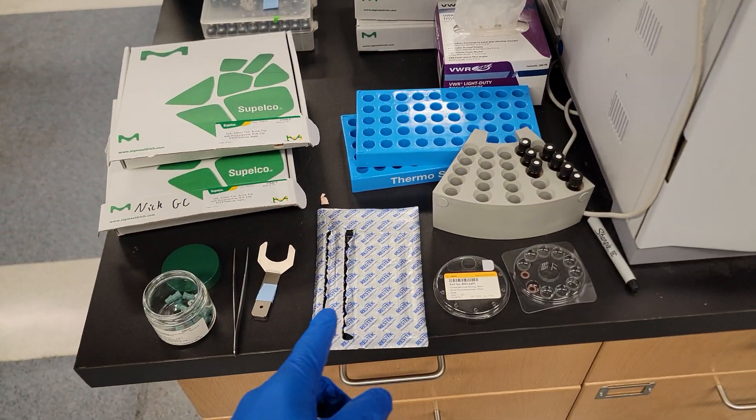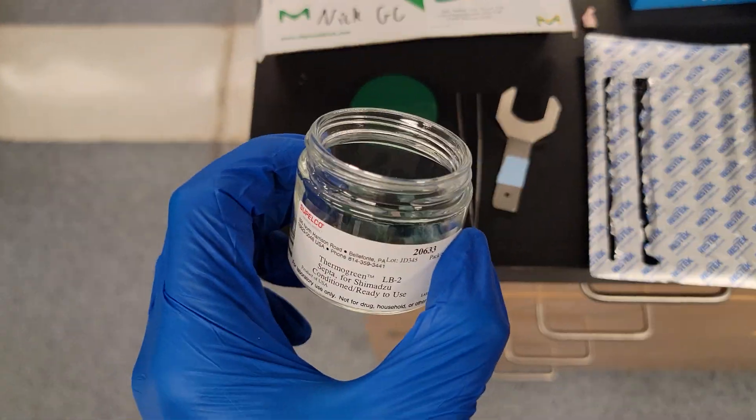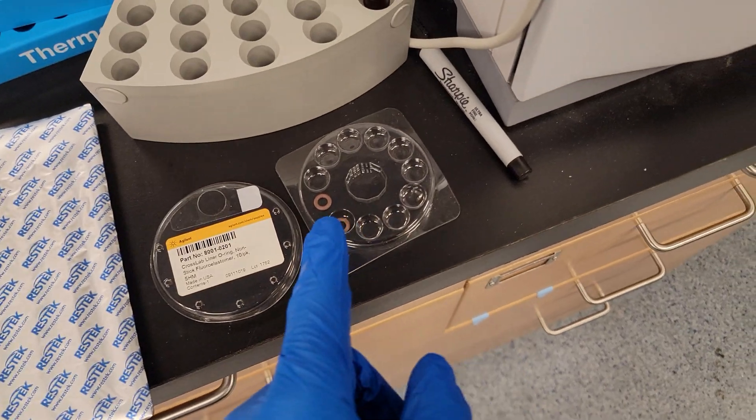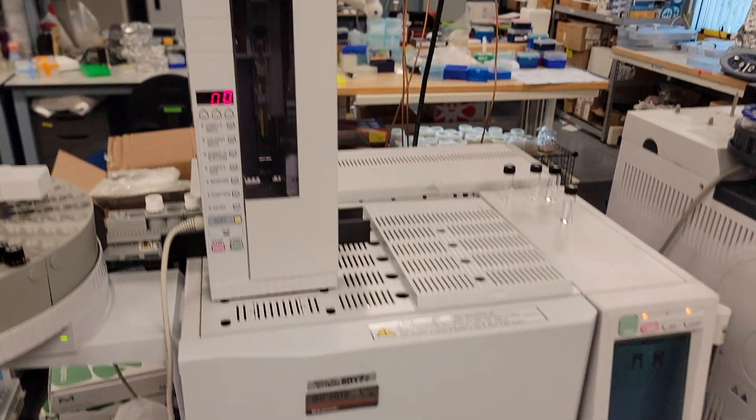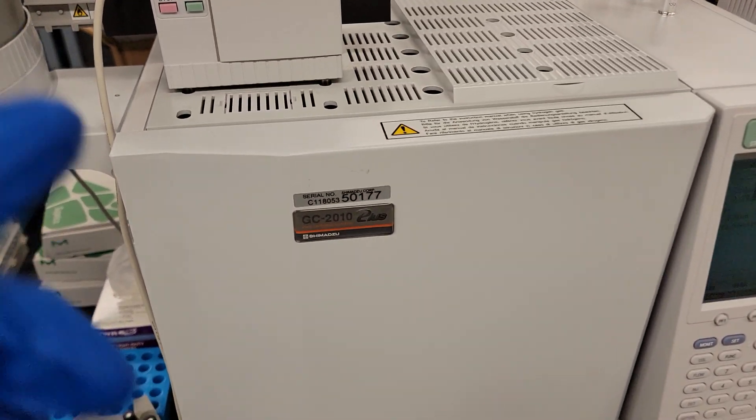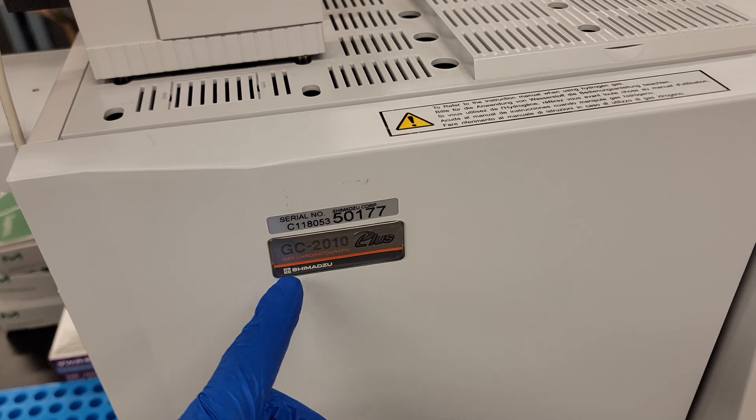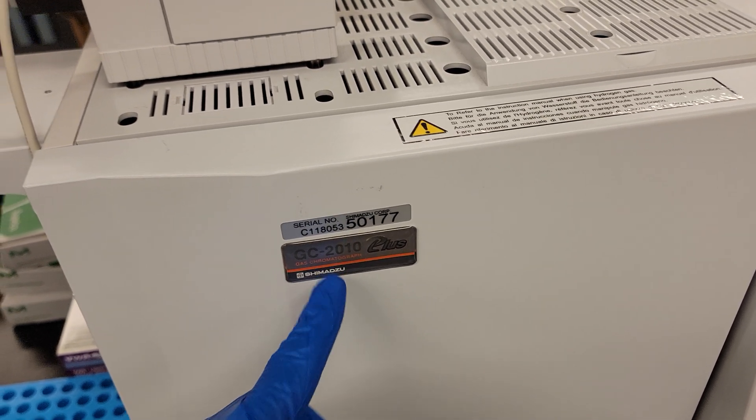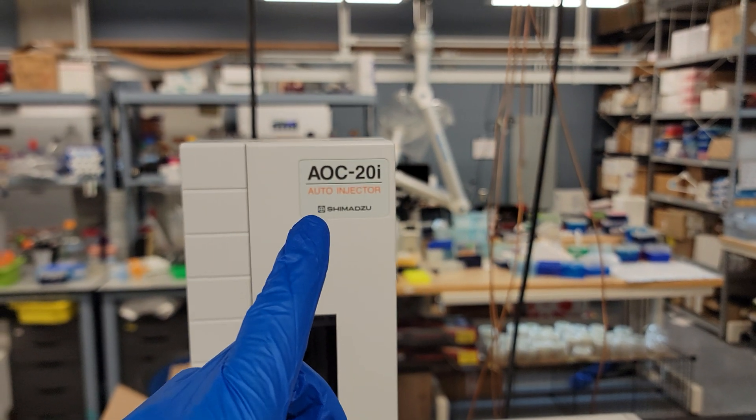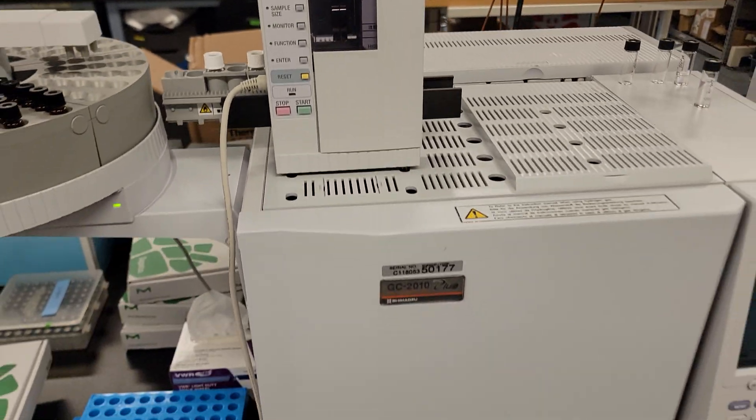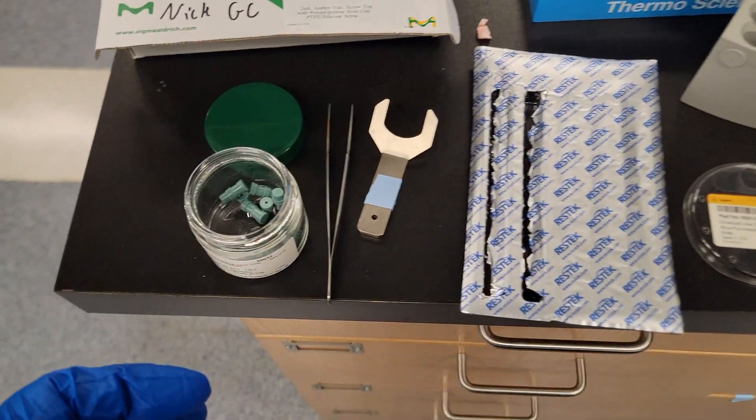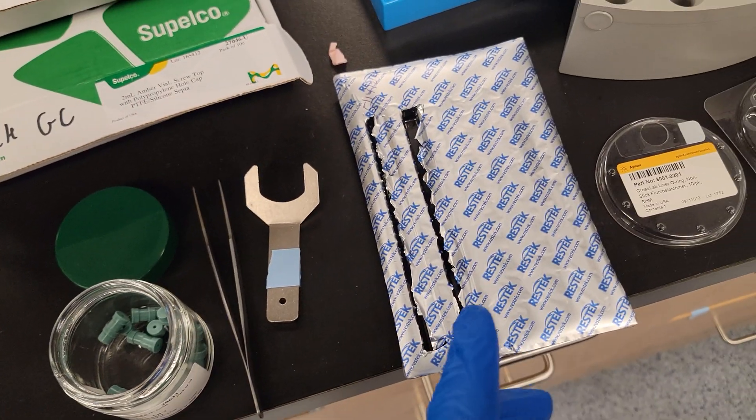This is how to change the topaz liner, septa, and o-ring on this Shimadzu gas chromatograph. It's probably similar on other Shimadzu machines, but this is a GC 2010. This one has the AOI auto sampler.